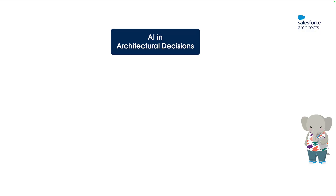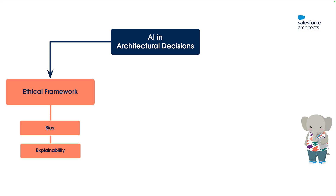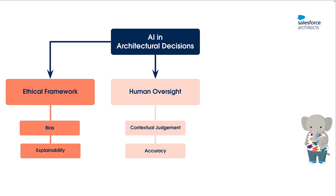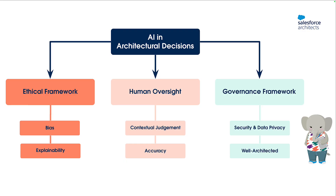When I talk about AI in Architectural Decisions, I like to talk about three things. Firstly, you need an ethical framework. Using AI for decision-making can have negative consequences because large language models can amplify societal biases, and the probabilistic nature has a certain lack of explainability. Secondly, an AI-augmented world needs human oversight — an architect should always be accountable for every decision and should course-correct AI-generated content. And lastly, you need a governance framework. Using AI for decisions has the risk of exposing sensitive or proprietary information, so consideration about security is important. And the decision process isn't about documenting generic pros and cons, but about evaluating choices against a structured set of criteria. So I recommend using the Salesforce well-architected framework in this process.